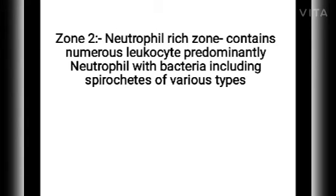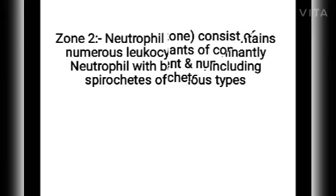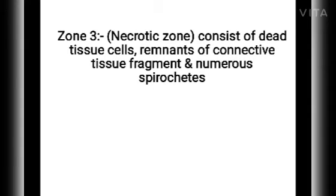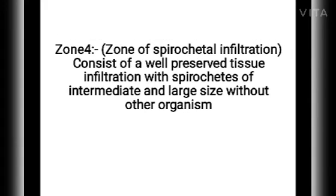The third zone is the necrotic zone. As the name suggests, it consists of dead tissue cells, remnants of connective tissue fragments, neutrophils, and bacteria. The fourth zone is the zone of spirochetal infiltration, which consists of well-preserved tissue infiltrated with spirochetes of intermediate or large size, without other organisms.